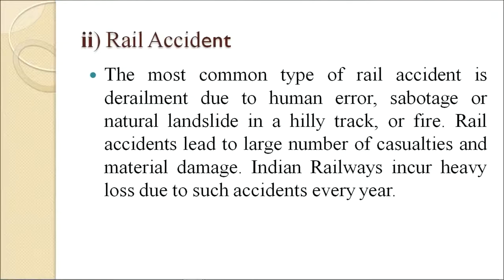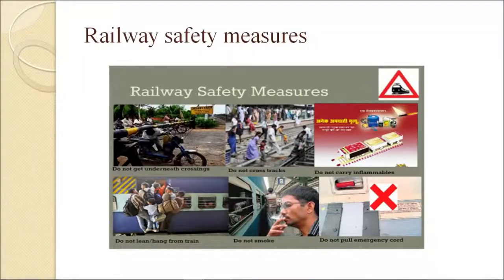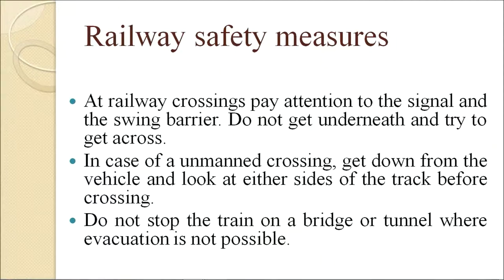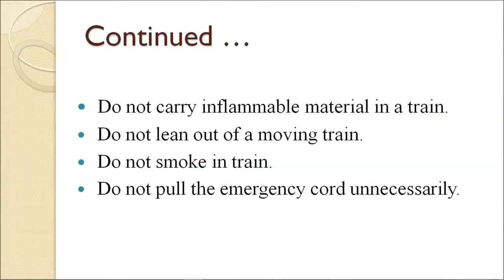Now come to rail accidents. The most common type of rail accident is derailment due to human error, sabotage, natural landslides on hilly tracks, or fire. Rail accidents lead to large numbers of casualties and material damage. Indian railways incur heavy losses due to such accidents every year. Railway safety measures include: at railway crossings, pay attention to signals and safety measures; don't try to get across underneath barriers; at an unmanned crossing, get down from the vehicle and look at either side of the track before crossing; don't stop a train on a bridge or tunnel where evacuation is not possible; don't carry inflammable material in a train; don't lean out of a moving train; don't smoke in a train; don't pull the emergency cord unnecessarily.